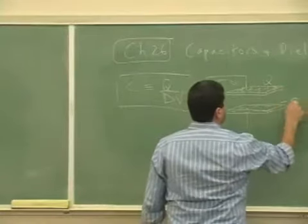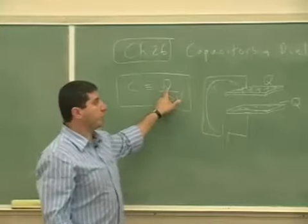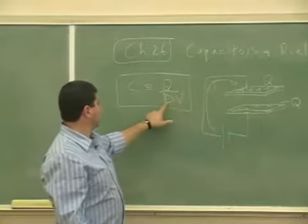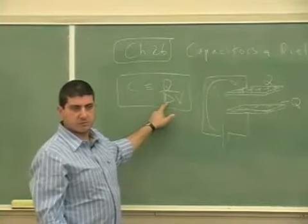The only difference is they have opposite and equal charges. So we take the absolute value of either charge, divide it by the potential difference between the plates.